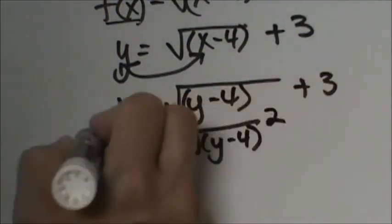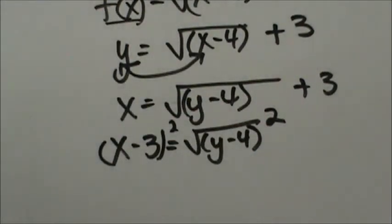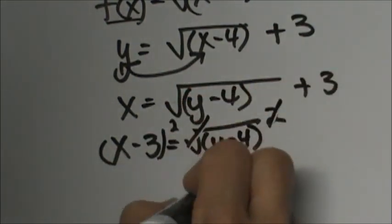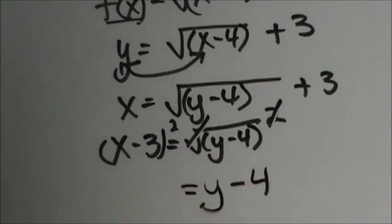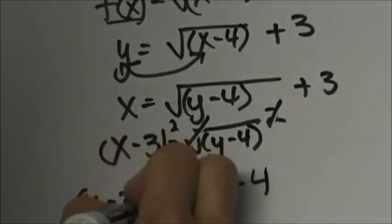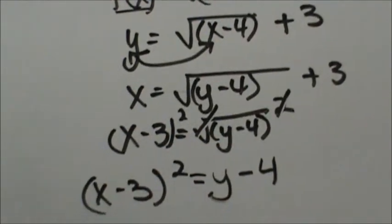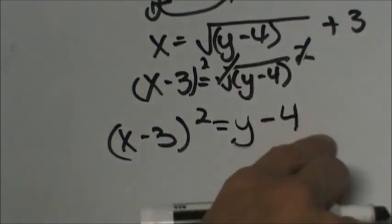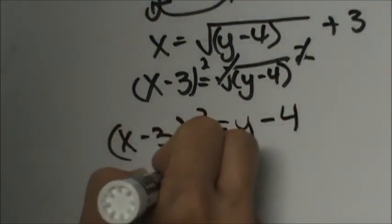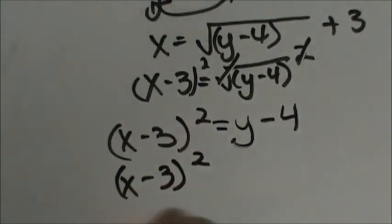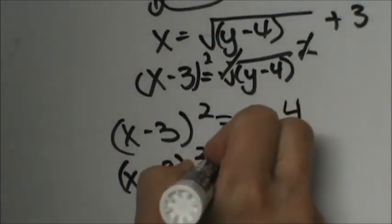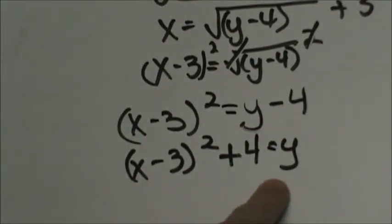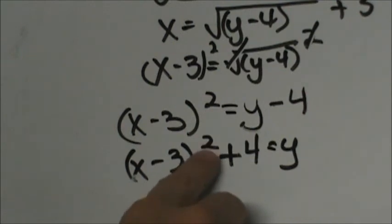Now, to get rid of the radical, square both sides. When you square a square root, the radical cancels and you're left with y minus 4 equals (x minus 3) squared. Now add 4 to both sides, keeping (x minus 3) as one group, so (x minus 3) squared plus 4 equals y. There's the inverse function: (x minus 3) quantity squared plus 4.